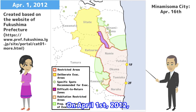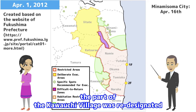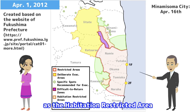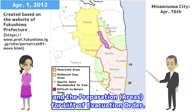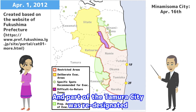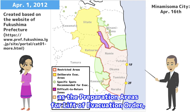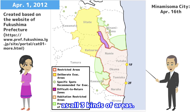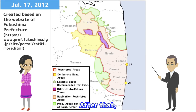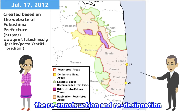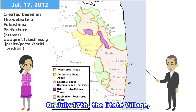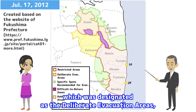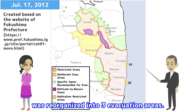On April 1, 2012, part of Kawauchi village was redesigned as the habitation restricted area and the preparation area for lift of evacuation order. Part of Tamura City was redesigned as the preparation areas for lift of evacuation order, and on April 16, part of Minamisoma City was redesigned as all three kinds of areas. After that, the reconstruction and re-designation of evacuation orders continued. On July 17, Iitate village, which had been designated as a deliberate evacuation area, was reorganized into three evacuation areas.